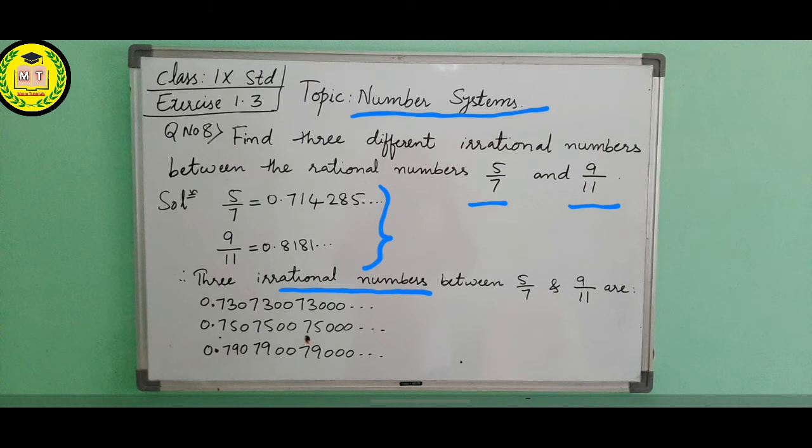Here in between 7 1, means after 7 1, you can take 0.72, 0.73, 0.74, any number till 0.81. In between these two we can write any three numbers. Here I had took these three numbers, you can write other three numbers also, then also it will be correct.